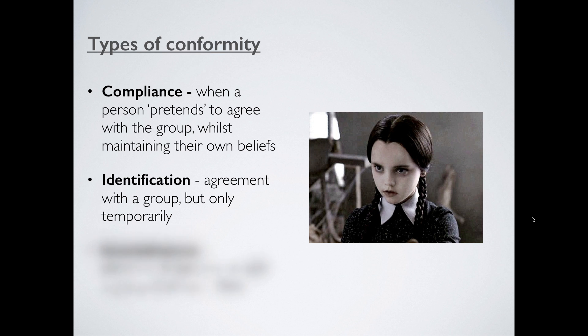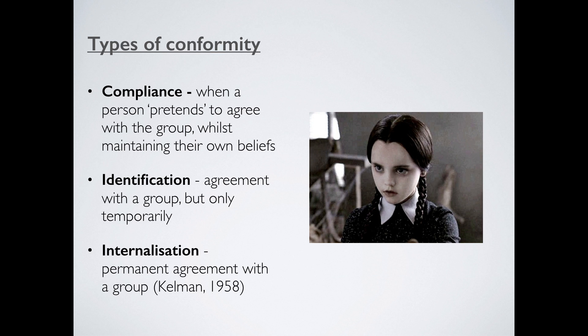The last form of conformity is the deepest form — this is called internalization: permanent and total long-lasting agreement with a particular group. Imagine a girl called Sally who spends a lot of time with her group of friends who love to rock climb. She comes to take up the sport, and long after she's fallen out of touch with those friends and doesn't see them anymore, she still quite likes rock climbing. That is internalization — permanent agreement with a group.